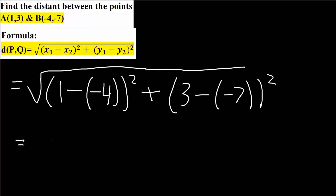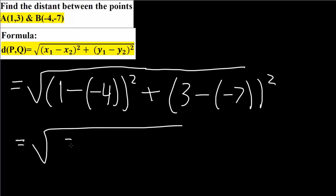This is equal to the square root of: 1 minus negative 4, so 1 plus 4 is 5, and 5 squared is 25. Next, 3 minus negative 7 — 3 plus 7 is 10, and 10 squared is 100. So plus 100.